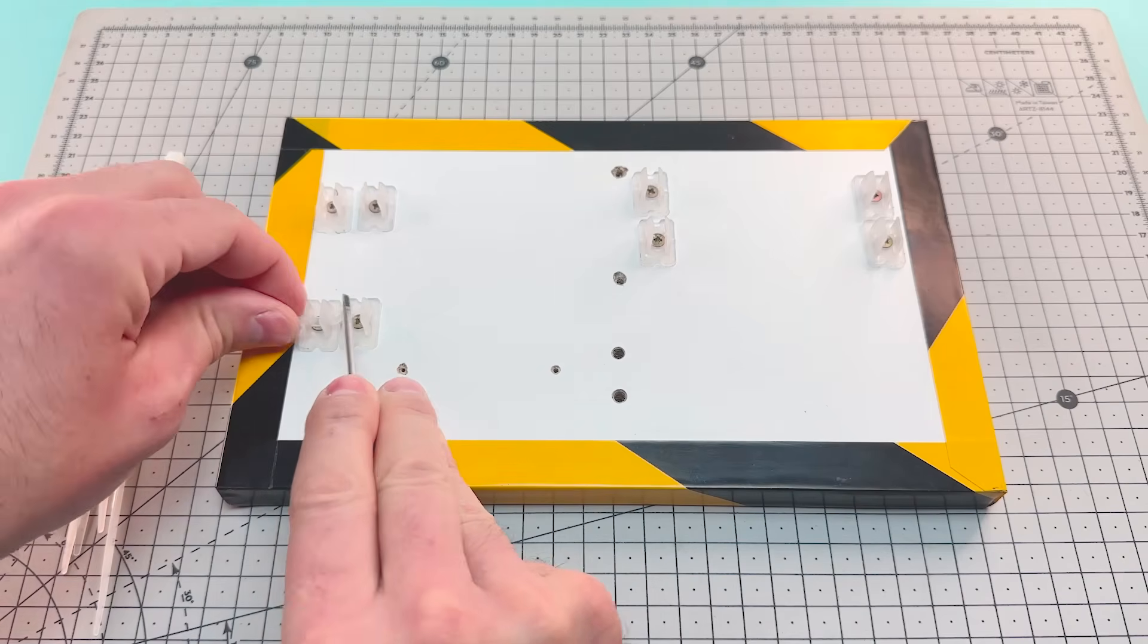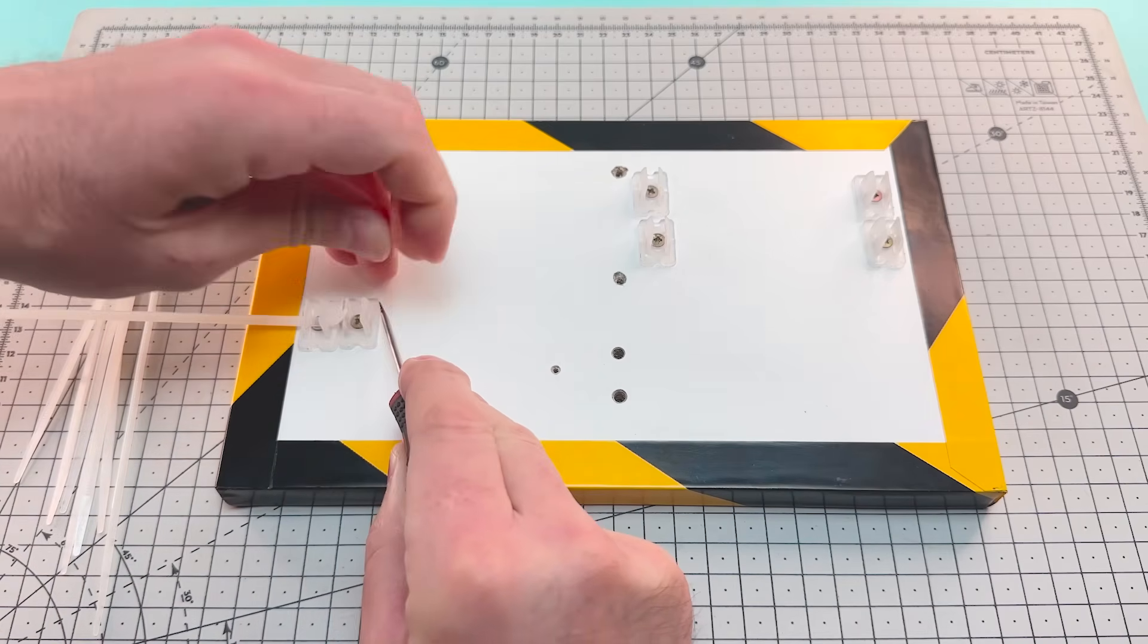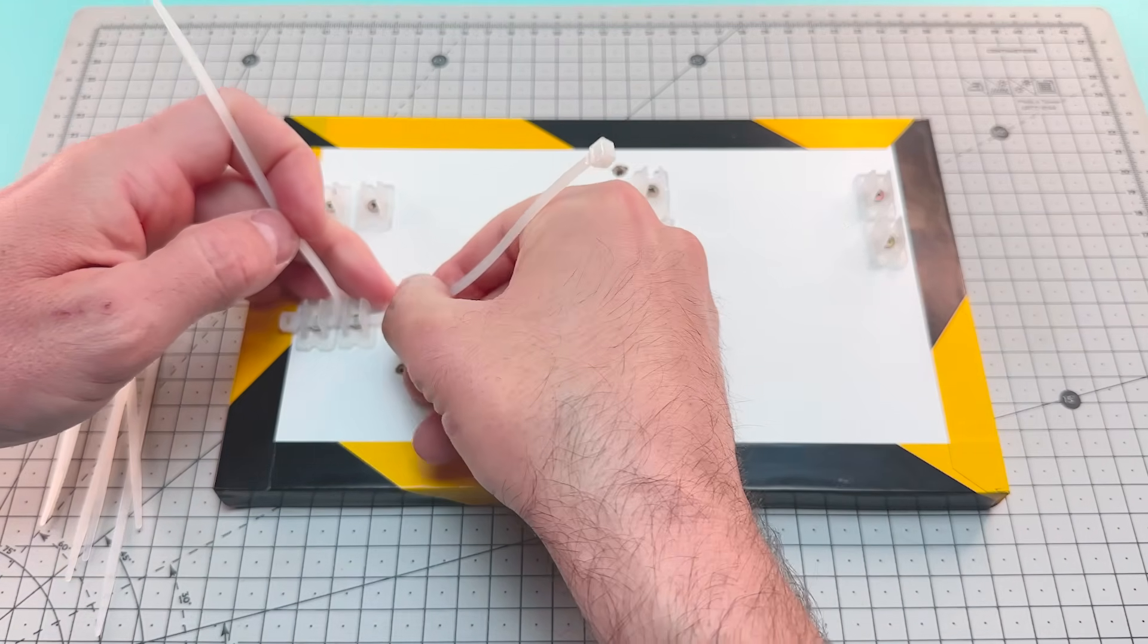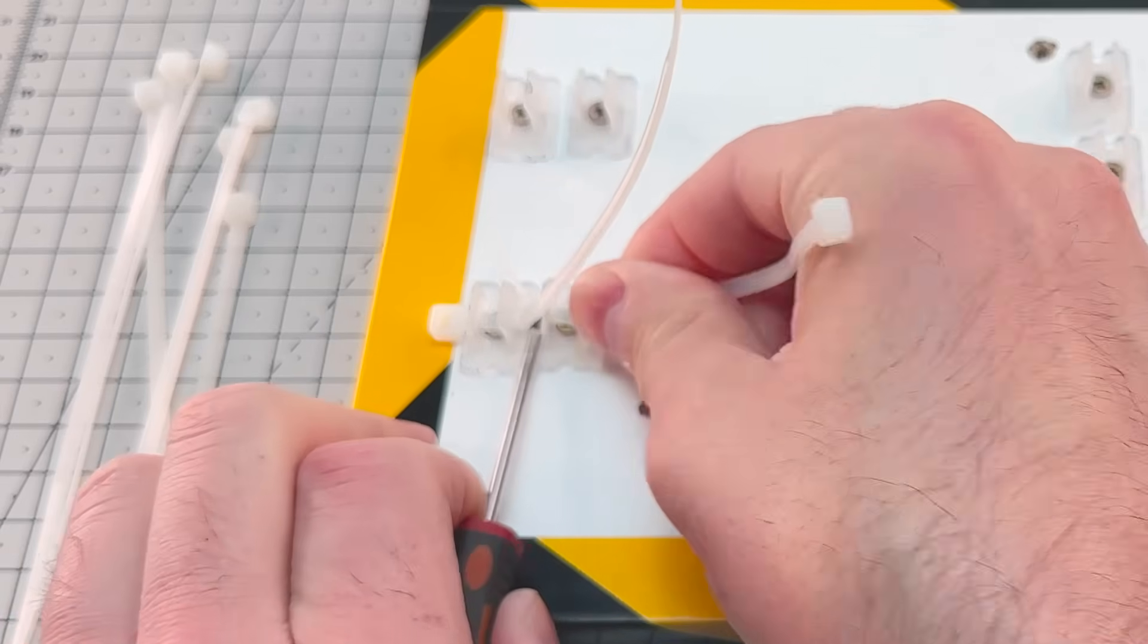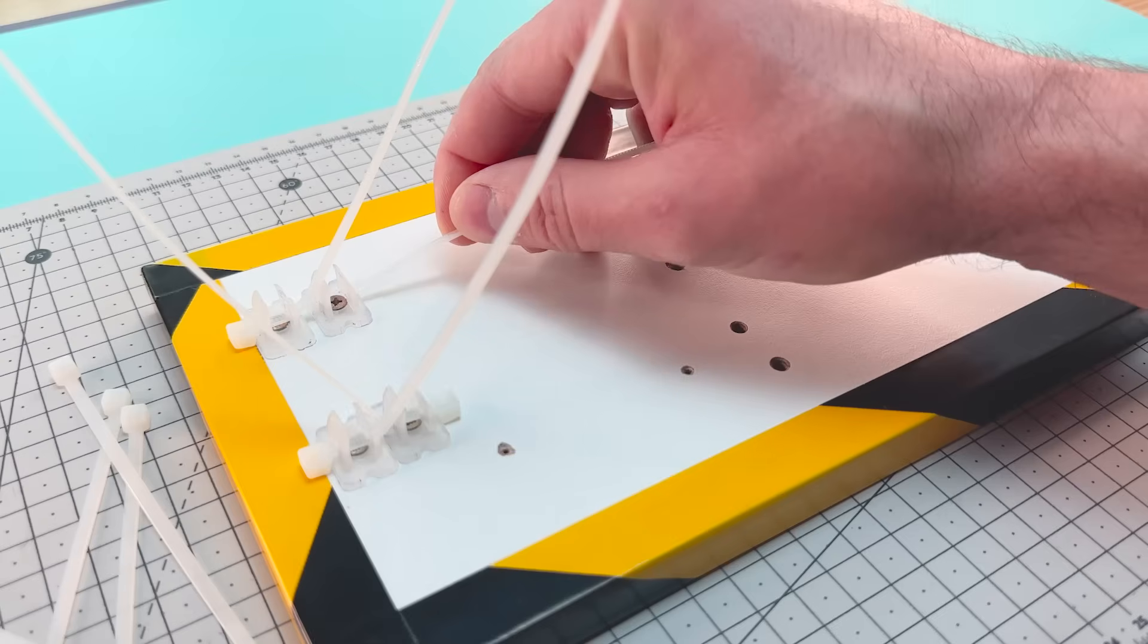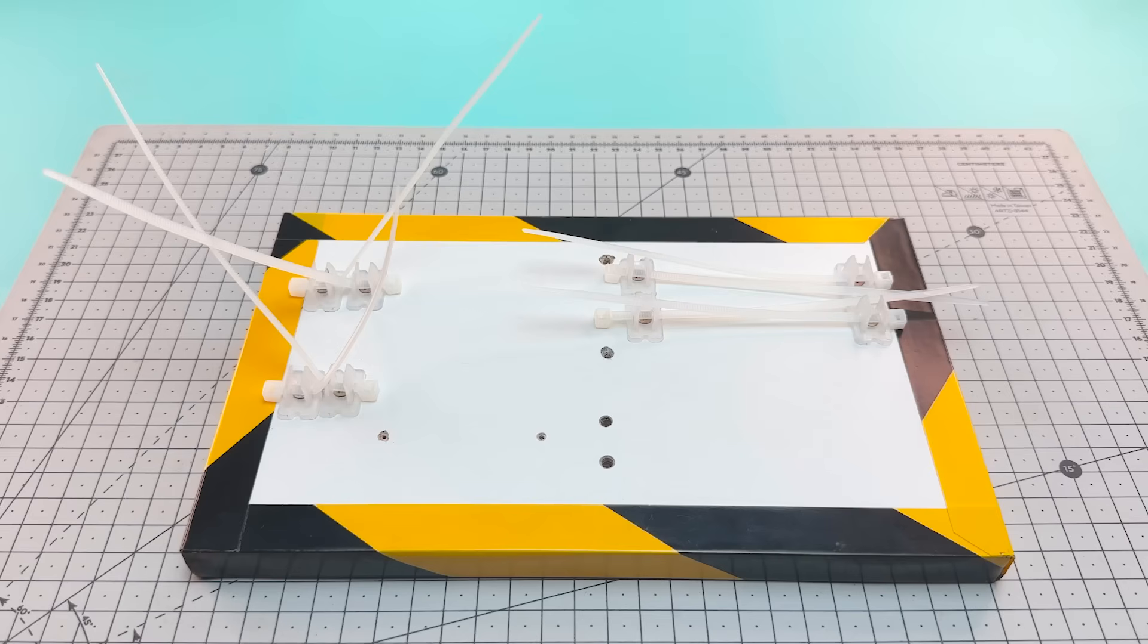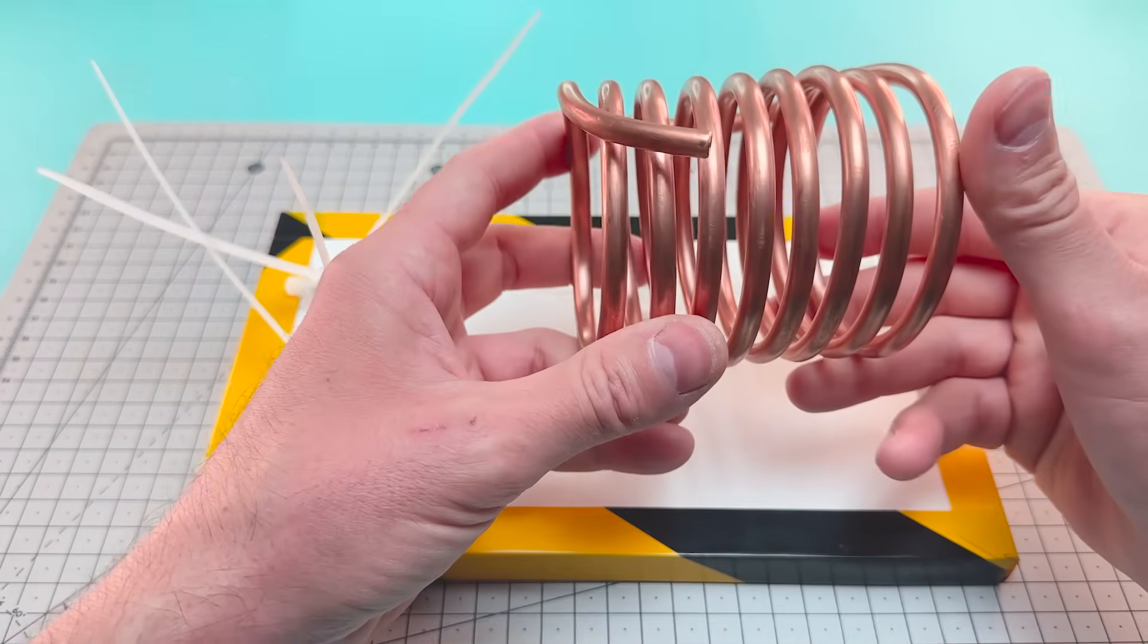A few zip ties will be enough to fasten our conduit. We insert the zip ties through the supports to hold the tubes, and then we'll secure the evaporator.